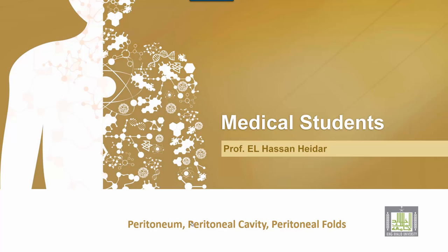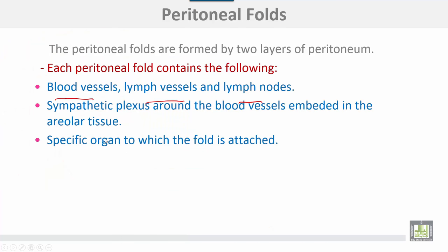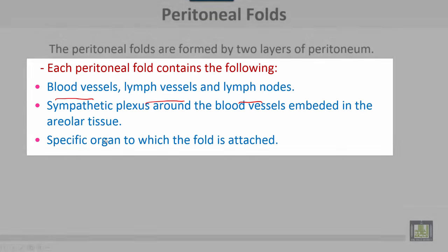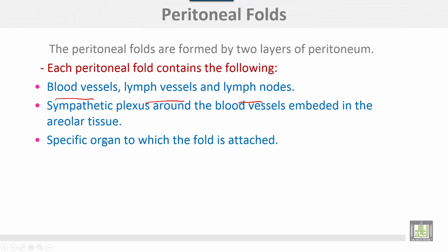Now we proceed to peritoneal folds. The peritoneal folds are formed by two layers of peritoneum. Each peritoneal fold contains the following: blood vessels, lymph vessels and lymph nodes, sympathetic plexus around the blood vessels embedded in the areolar tissue, and the specific organ to which the fold is attached.